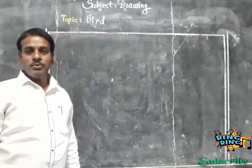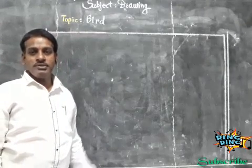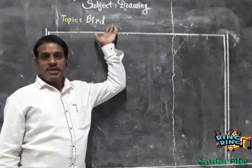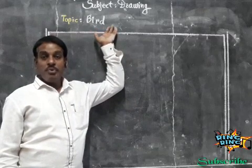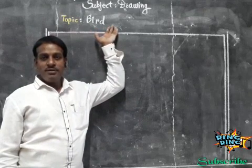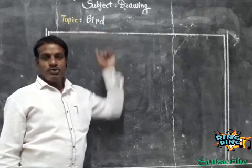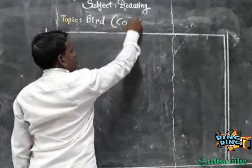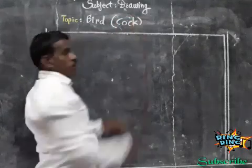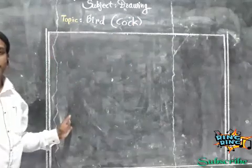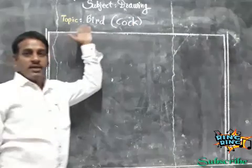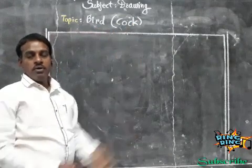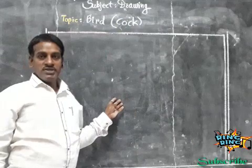Assalamualaikum warahmatullahi wabarakatuh. Hello students! Today I will give you one bird. He has wings but he cannot fly up in the sky. Which bird? Yes — Cock! So I write here in the bracket C-O-C-K, Cock. So first I will draw a great border, after that write a topic name. Bird in the bracket, I will draw Cock.